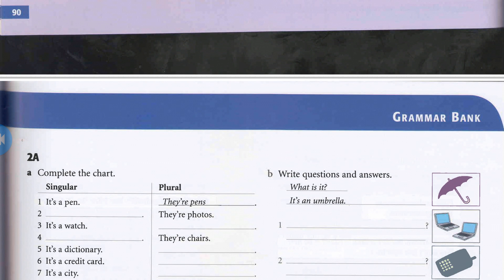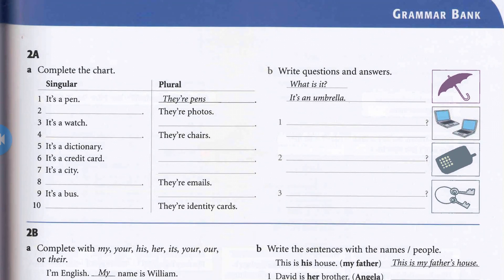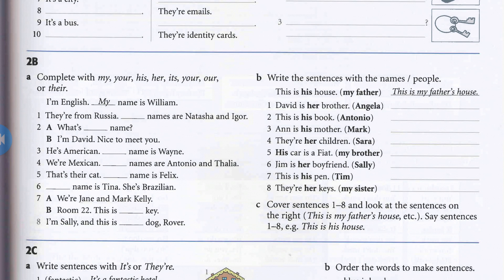Now we will do exercise number B. Look — write the sentences with the names of people. This is the example: This is his house. My father. → This is my father's house. Number one: David is her brother. Angela. → He is Angela's brother. Number two: This is his book. Antonio. → This is Antonio's book.